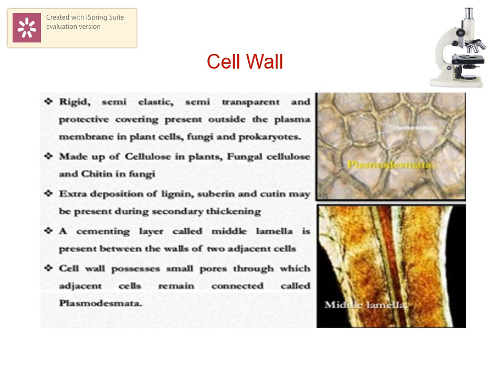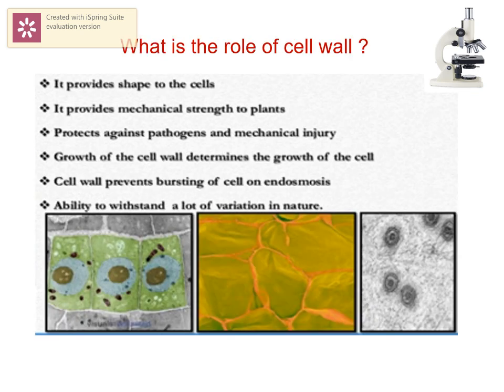The cell wall is rigid, semi-elastic, semi-transparent, and is a protective covering outside the plasma membrane found in plant cells, fungi, and bacteria. Its composition varies in plants, fungi, and bacteria. Sometimes extra deposition of materials like lignin or suberin on the cell wall adds thickening. The cell wall gives shape, hardness, and rigidity to the cell and helps in protecting inner parts.